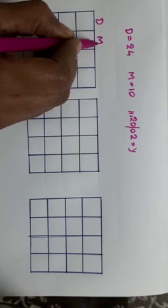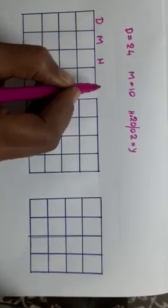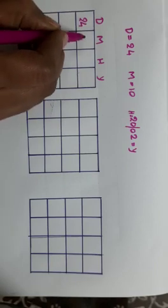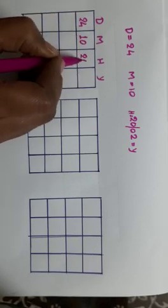Okay. Then first we will write date, month, hundreds and year. That is 24th October 2002.